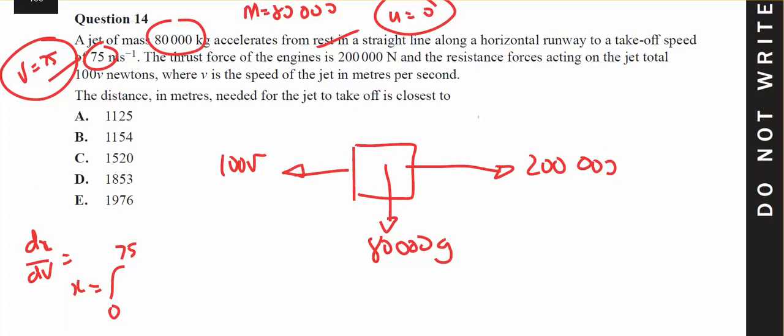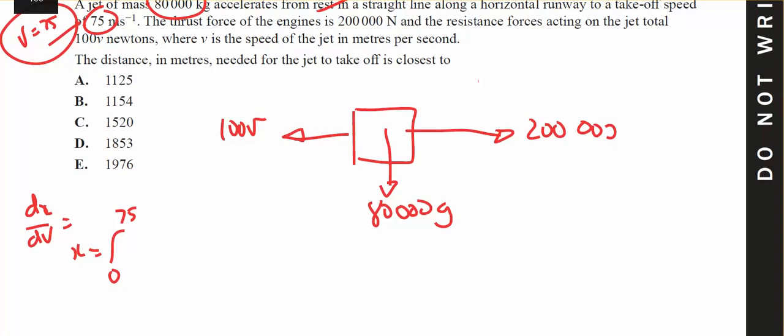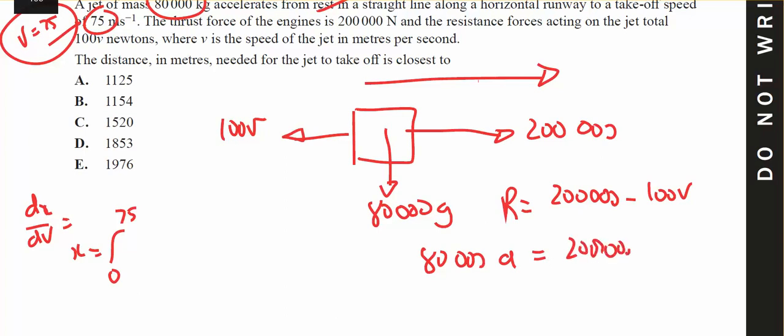The resultant force in the direction of motion will be 200,000 minus 100v, and that will equal 80,000a, which will be 200,000 minus 100v. And since I want dv/dx, it's going to be 80,000 times v dv/dx equals 200,000 minus 100v.